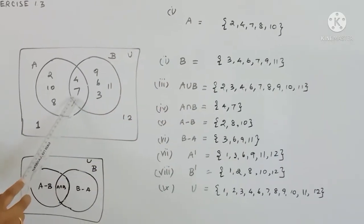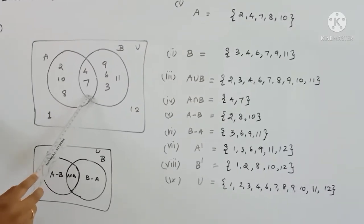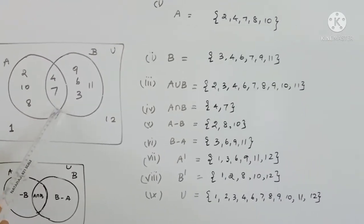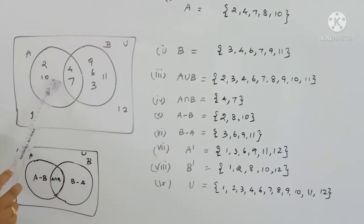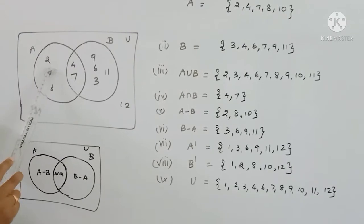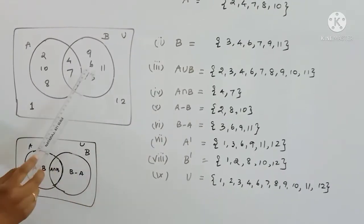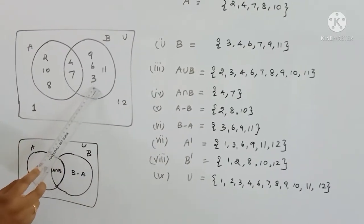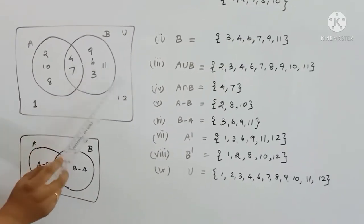For A minus B, the elements in A not in B are: 2, 8, 10. For B minus A, the elements in B not in A are: 3, 6, 9, 11.